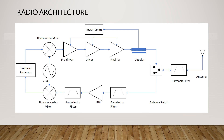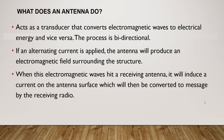Webster's Dictionary defines an antenna as a metallic device, either a rod or wire, for radiating or receiving radio waves. The IEEE standard definition terms for antenna defines the antenna or aerial as a means of radiating or receiving radio waves. The antenna is a transitional structure between free space and a guiding device. The antenna acts as a transducer that converts electromagnetic waves to electrical energy and vice versa. The process is bidirectional.